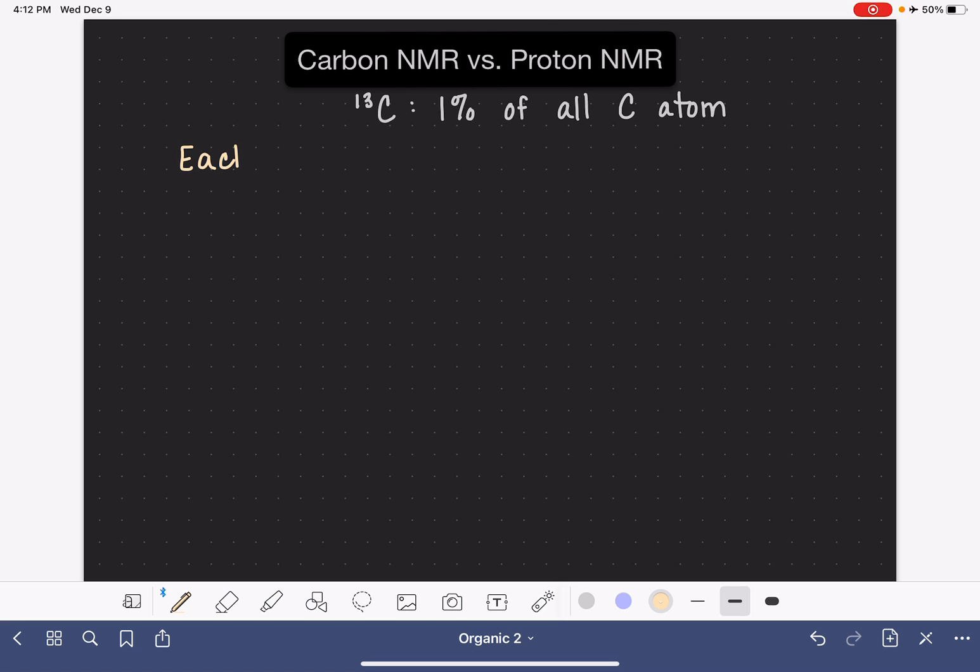Each molecule, unless we have hundreds of carbon atoms in the molecule, most likely has either no carbon-13 or just one carbon-13 atom. Out of all the carbon atoms, the majority in a molecule are definitely going to be carbon-12.